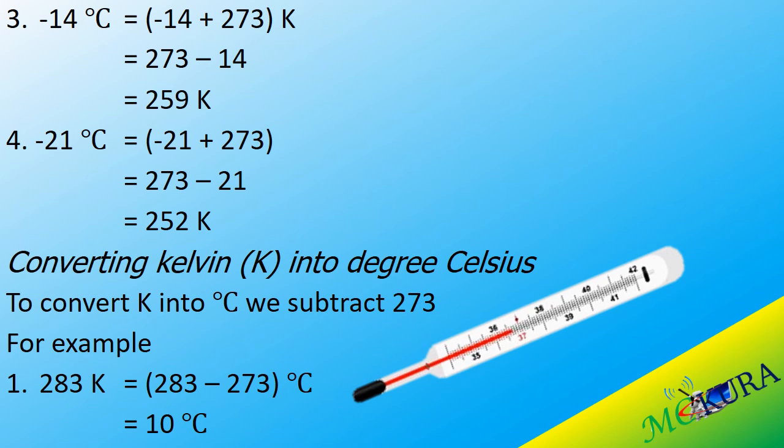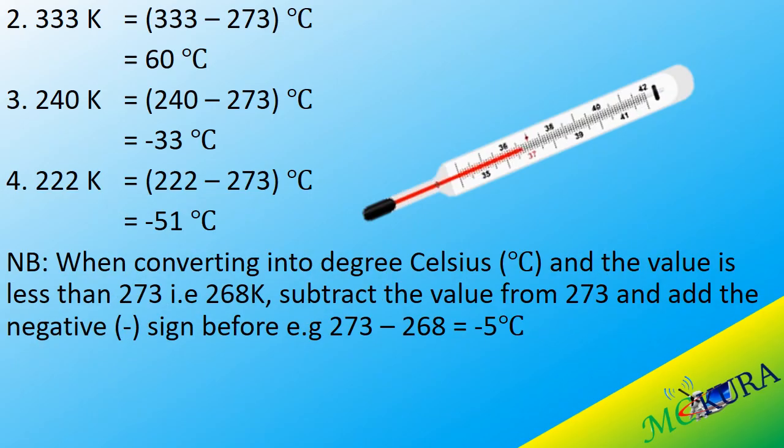What about converting Kelvin into degrees Celsius? To convert Kelvin into degrees Celsius, we subtract 273. For example, if we have 283 Kelvin, we subtract 273 from 283 to get 10 degrees Celsius. If we are given 333 Kelvin, we subtract 273 from 333 to get 60 degrees Celsius.